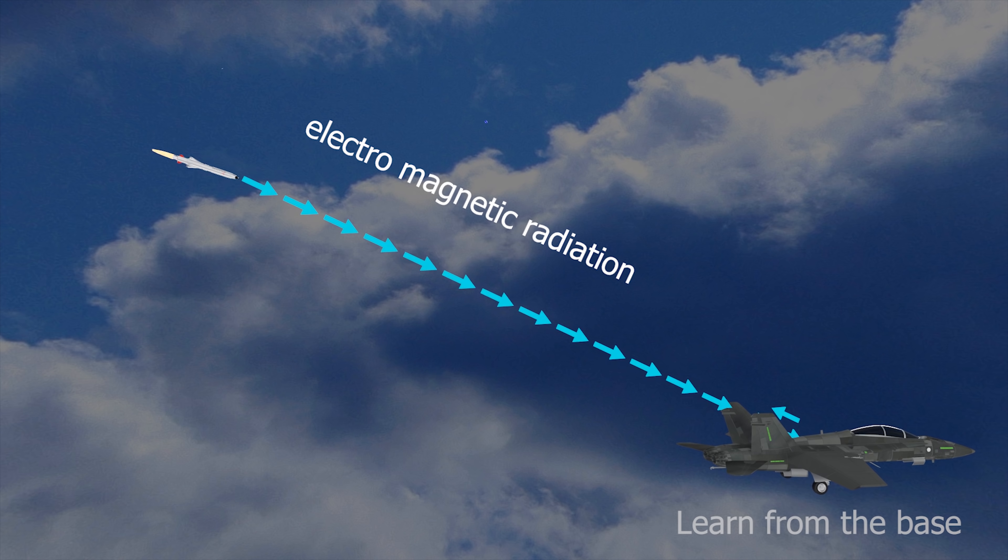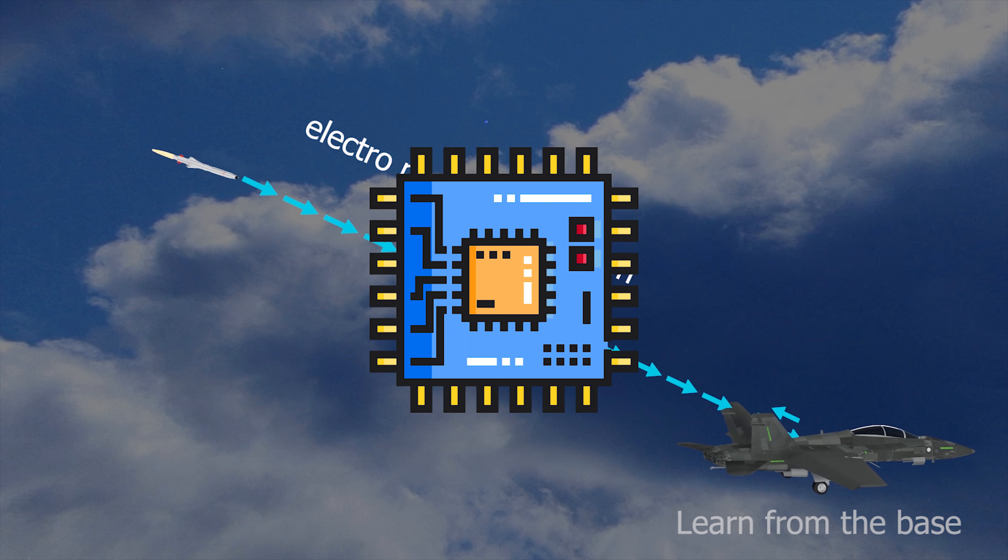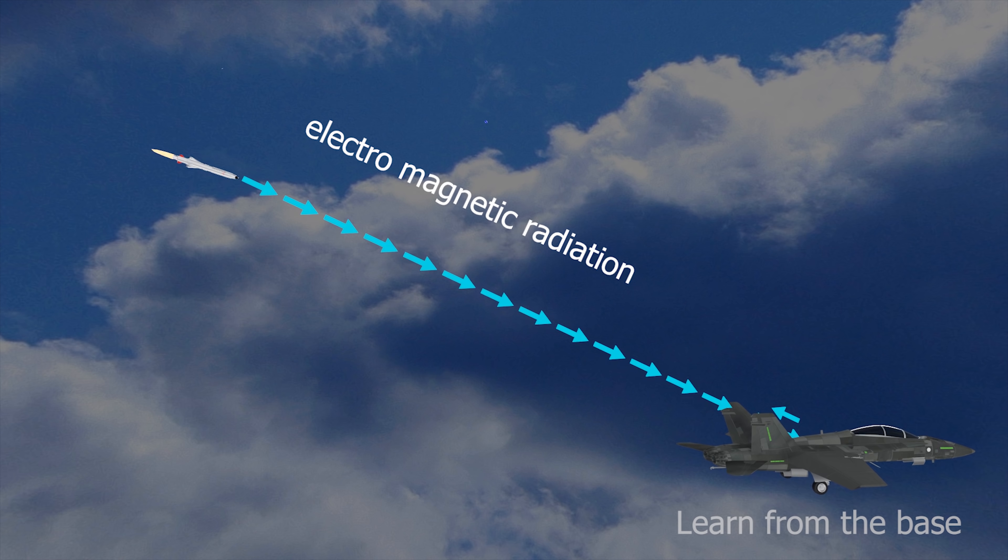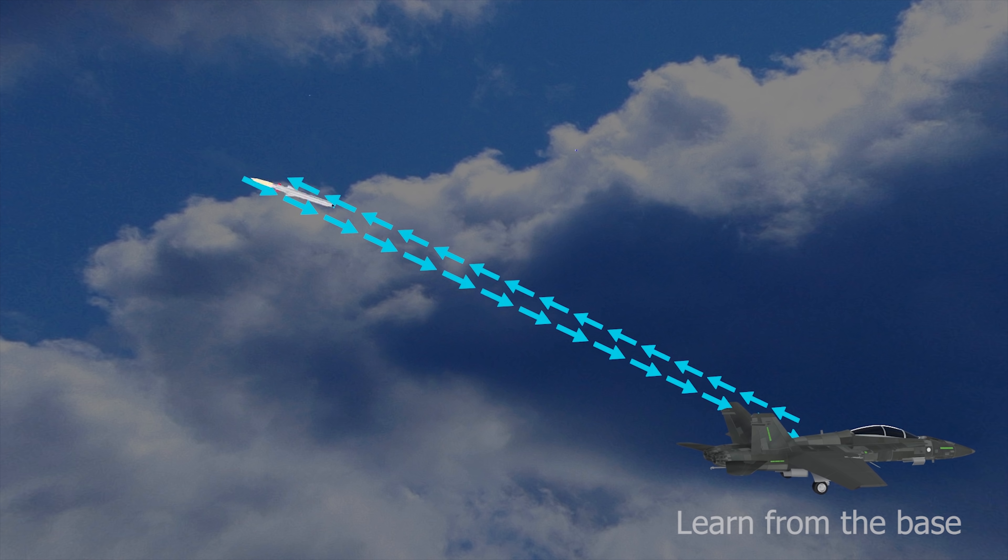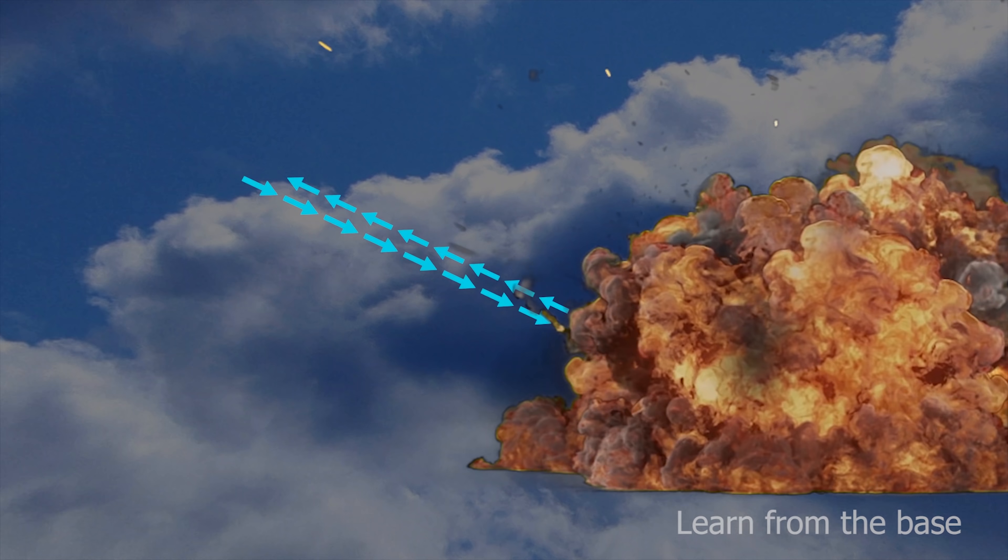And this radiation bounces back to the missile receiver. Electronic equipment measures the time taken to receive the signal, and also measures the velocity, acceleration, distance, and other variables of the target. Then this information is sent into the autopilot computer. Then the autopilot computer steers the missile on the proper path to hit the target accurately.